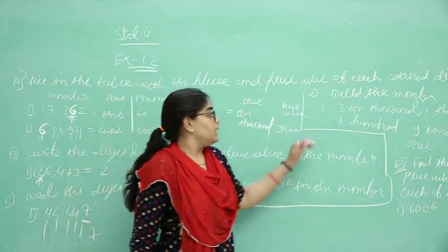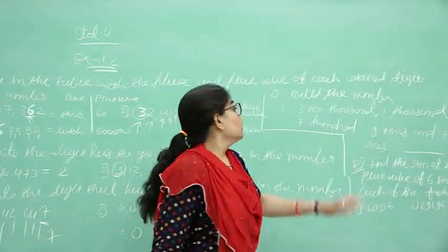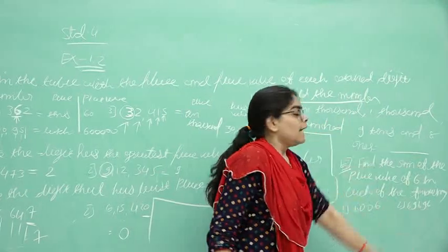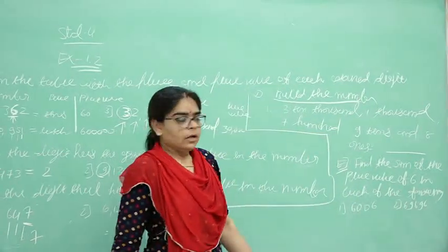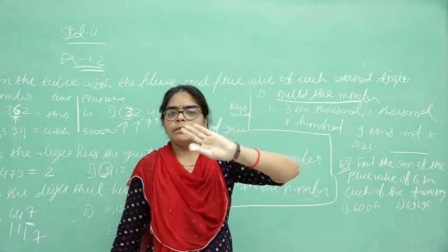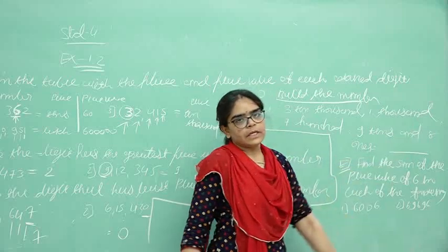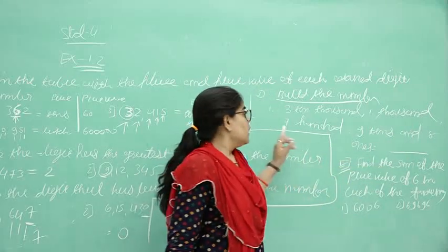If in your question least place value in the numbers, then you have to find out always and always last digit. Then after my students, here, next question: build the number. Expansion is given.